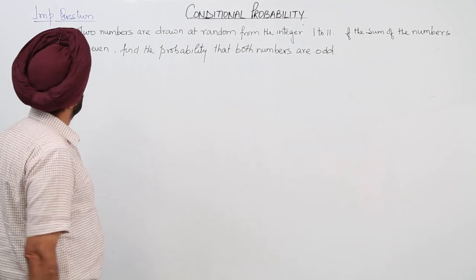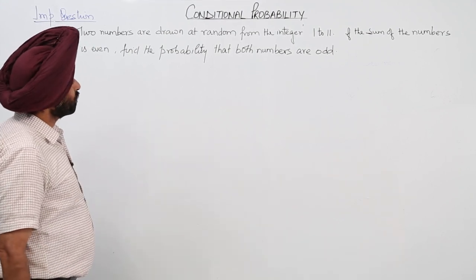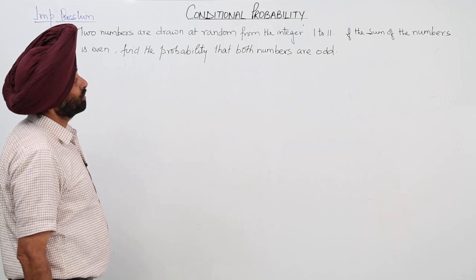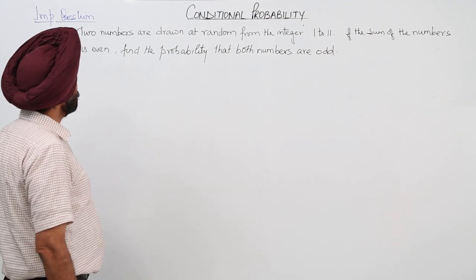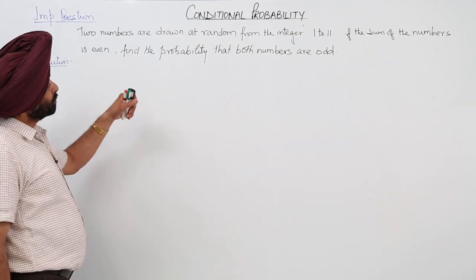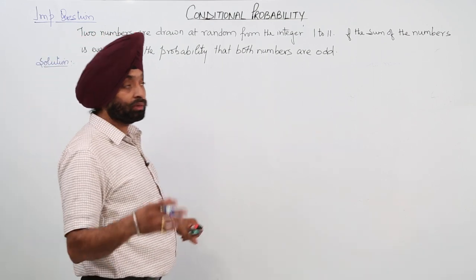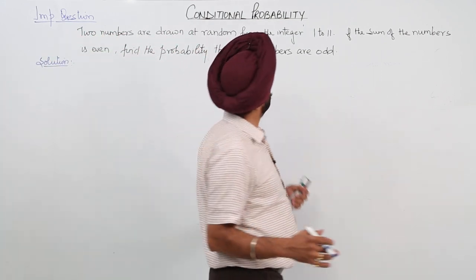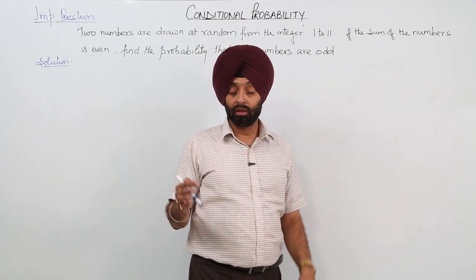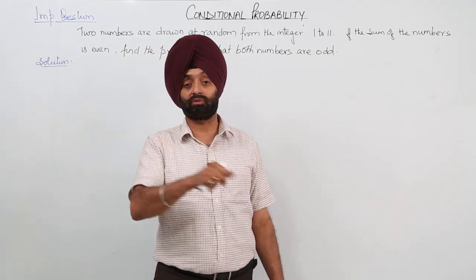A very nice question. 2 numbers are drawn at random from the integers 1 to 11. If the sum of the numbers is even, find the probability that both numbers are odd. Now they are asking if the sum of the numbers is even. Remember one thing: sum of 2 odd numbers is also even.